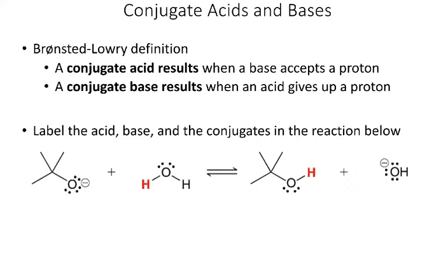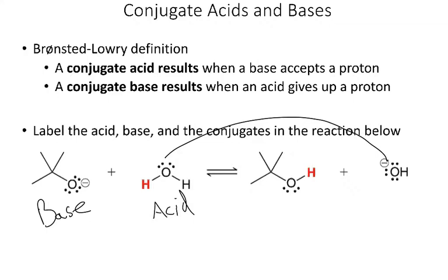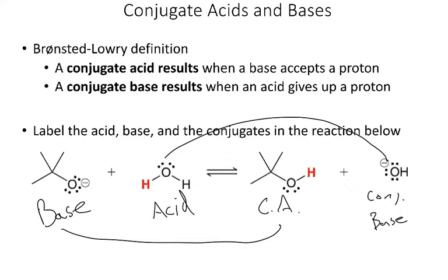I'm looking at where the proton is going. Starting with water, it becomes OH-, so it's losing an H+. If it's losing it, it must be donating it, so water must be the acid. Checking the other compound — it gained an H, so it accepted a proton, making it the base. The pair of the acid is the conjugate base, and the pair of the base is the conjugate acid.